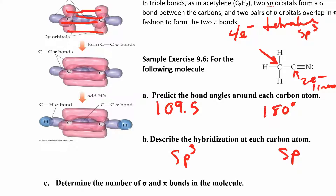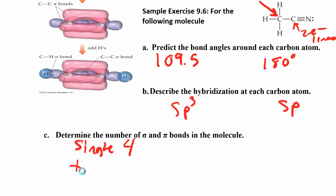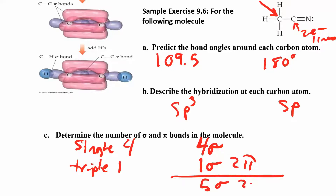You should be able to connect all these pieces: draw the Lewis structure, predict bond angles, determine the shape and hybridization, and count sigma and pi bonds. That second carbon with two electron domains is sp hybridized. Counting the bonds: there are four single bonds (four sigmas) and one triple bond (one sigma + two pi), giving five sigma bonds and two pi bonds total in that molecule.